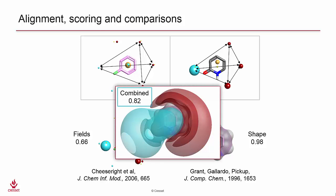Using these two similarity features in combination, we get a combined score of 0.82. By default, we use 50% fields, 50% shape, but this option is customizable to the user preference.